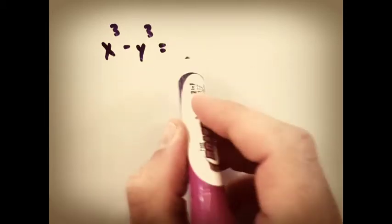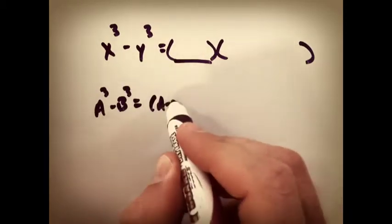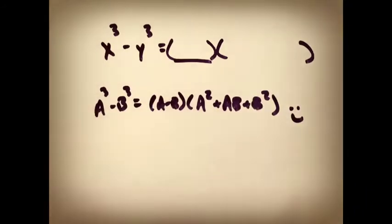All right, next up, X cubed minus Y cubed. You should look up that formula. I'll give you the formula. A cubed minus B cubed falls into this formula, so you should be able to figure it out with X's and Y's.